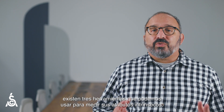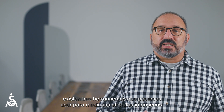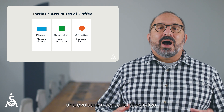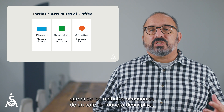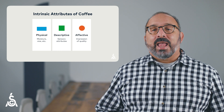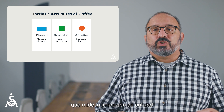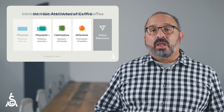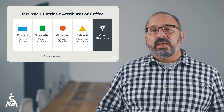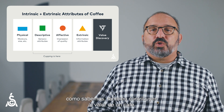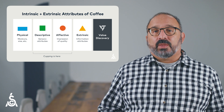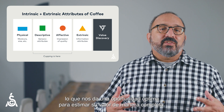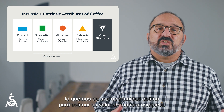When measuring coffee attributes, there are three tools we can use to measure a coffee's intrinsic attributes: a physical assessment, where we evaluate the coffee's physical properties; a sensory descriptive assessment, which measures the coffee's sensory attributes in a descriptive way; and an affective assessment, which measures the cupper's impression of a coffee's quality based on its intrinsic attributes. A major innovation in the coffee value assessment is the addition of a tool to measure extrinsic attributes, which we know also contribute to a coffee's value. These four tools used together can provide a complete picture of a coffee's attributes and give us the best possible chance of assessing a coffee's value completely.